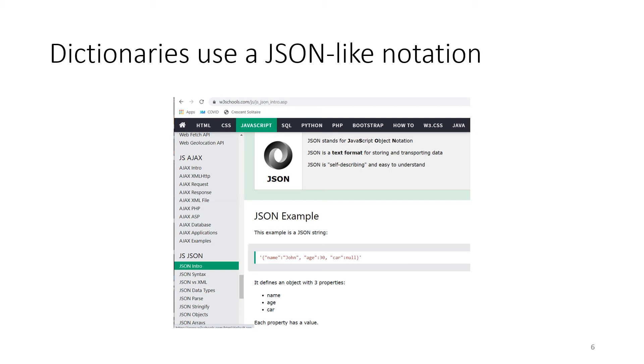Then it has key-value pairs. So the key is separated from the value using a colon, so we know which is the key and which is the value. And then the pairs, the key-value pairs, are separated from one another by a comma.